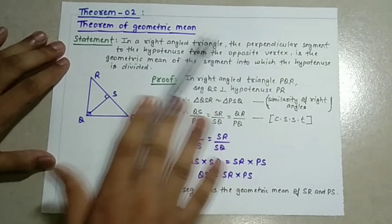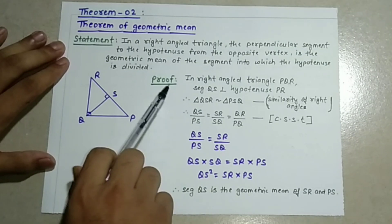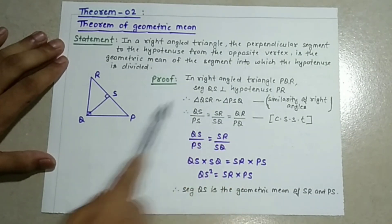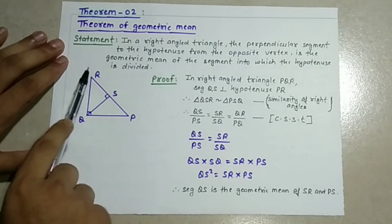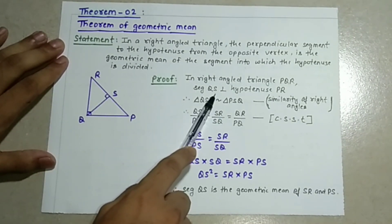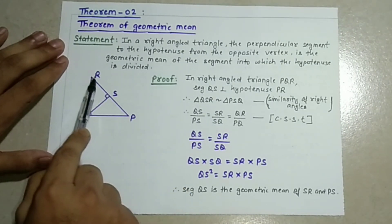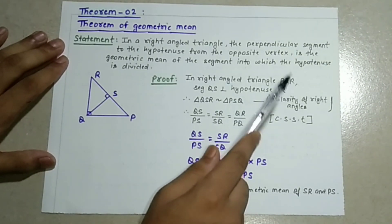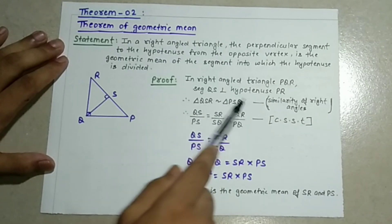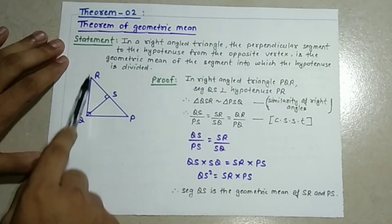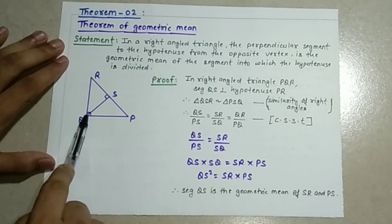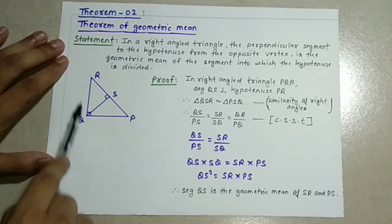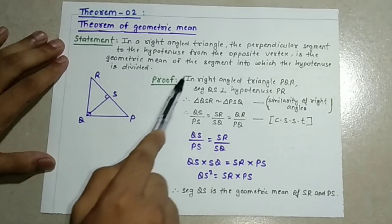I don't need to remember the statement or proof part in detail. For the proof: in right angle triangle PQR, segment QS is perpendicular to hypotenuse PR. From the similarity theorem we read last time, when a perpendicular is drawn to the hypotenuse, the two sub-triangles formed are similar to each other.